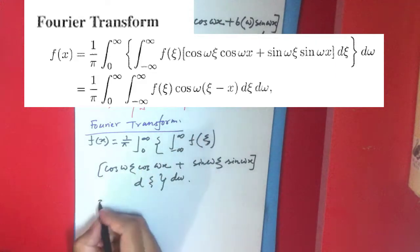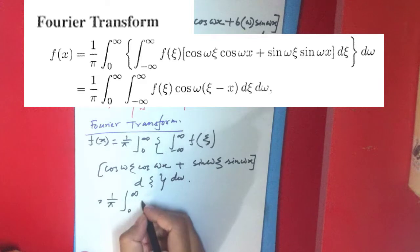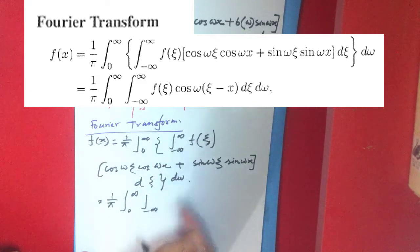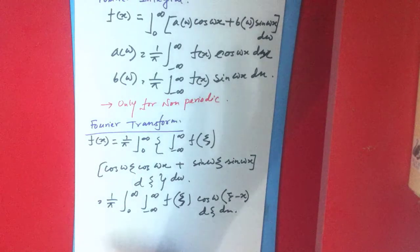Simplifying this: 1/π times the integral from 0 to infinity, integral from -∞ to +∞ of f(ξ) cos[ω(ξ - x)] dξ dω. This is the simplified form.